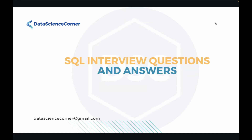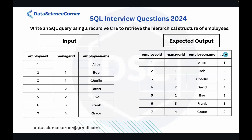Hello and welcome to Data Science Corner. This is the SQL interview questions and answer series. Today we are going to look into one of the interview questions where we have been given an input table, and the expected output table. The query is to write a SQL query using a recursive CTE to retrieve the hierarchical structure of employees. We have been given employee ID, manager ID, and employee name in the input table.